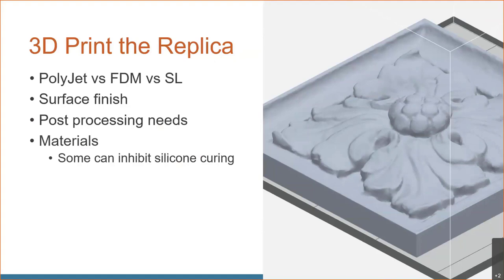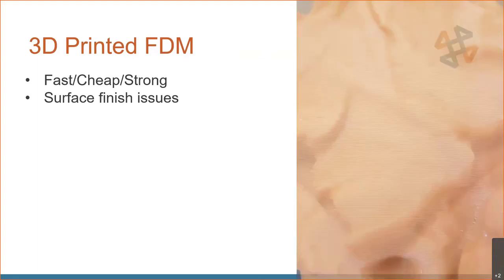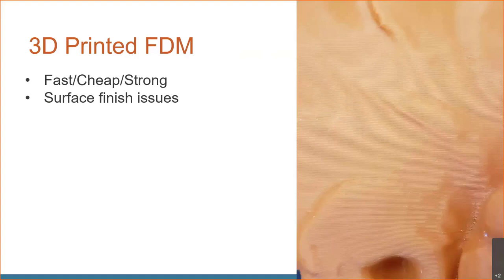Starting with FDM: it's a pretty fast technology, pretty cheap, and makes strong parts, but it has some surface finish issues. FDM works similarly to a hot glue gun — it lays down a bead of thermoplastic material that cools and becomes rigid, layer by layer. Depending on how you orient the part in the machine, you can minimize layer lines. Oriented more vertically, you can get some fairly smooth surfaces, though you may still want to sand them down.